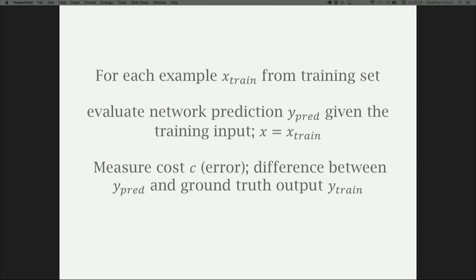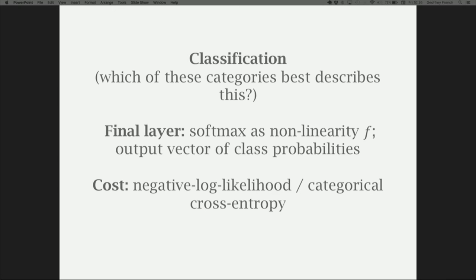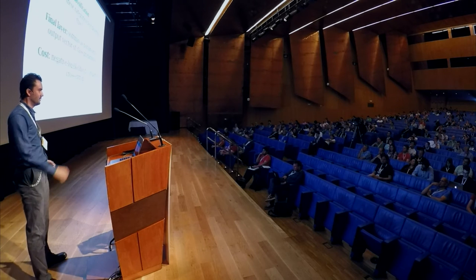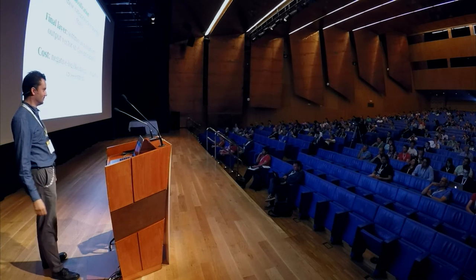The cost function is important. For classification, our final layer uses a function called softmax as our non-linearity, and it outputs a vector of class probabilities. Think of it this way: if you sum up a bunch of numbers and divide each element by the sum, you get a probability — assuming all numbers are positive. Since values in a neural network can go negative, softmax first takes the exponent of all input numbers, sums them, then divides each exponent by the sum of exponents. Our cost function is negative log likelihood, also known as categorical cross-entropy.